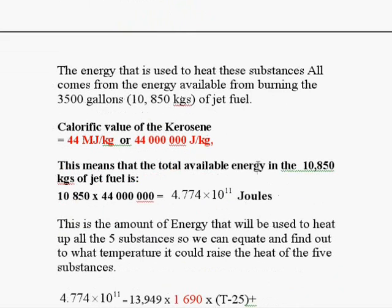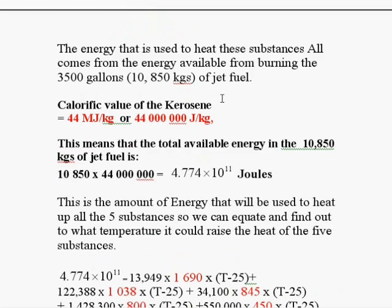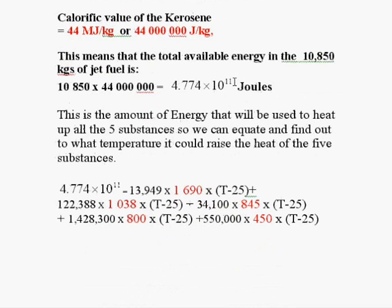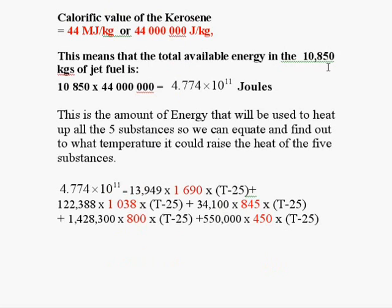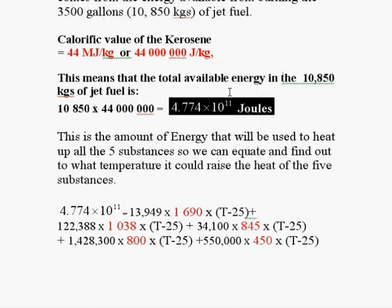So, the energy that is used to heat these substances all comes from the energy available from the burning of the 3,500 gallons or the 10,850 kilograms of jet fuel. This means that the total available energy in the 10,850 kilograms of jet fuel is 10,850 multiplied by 44 million joules per kilogram equals 4.774 times 10 to the 11 joules. So, this is the total energy available from the fuel.